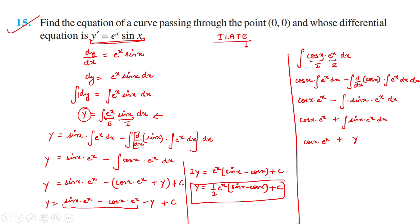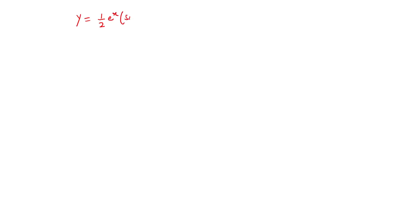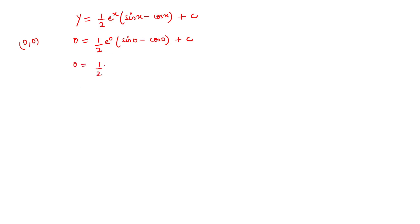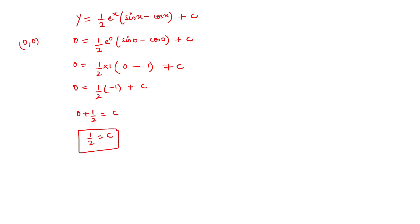If the point were not given, this general solution would be our answer. But since the point (0,0) is given, we substitute x = 0 and y = 0 into the general solution: 0 = (1/2)e^0(sin 0 − cos 0) + C. e^0 = 1, sin 0 = 0, cos 0 = 1, so 0 = (1/2)(0 − 1) + C = −1/2 + C. Therefore C = 1/2.